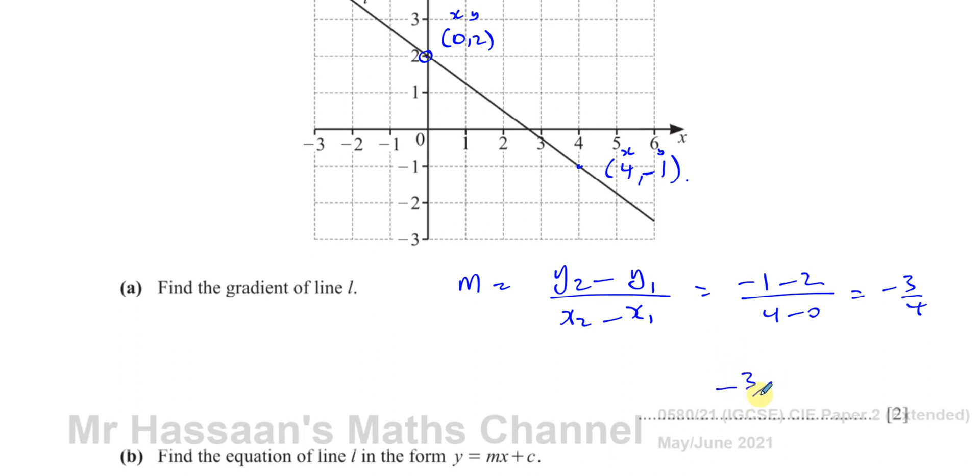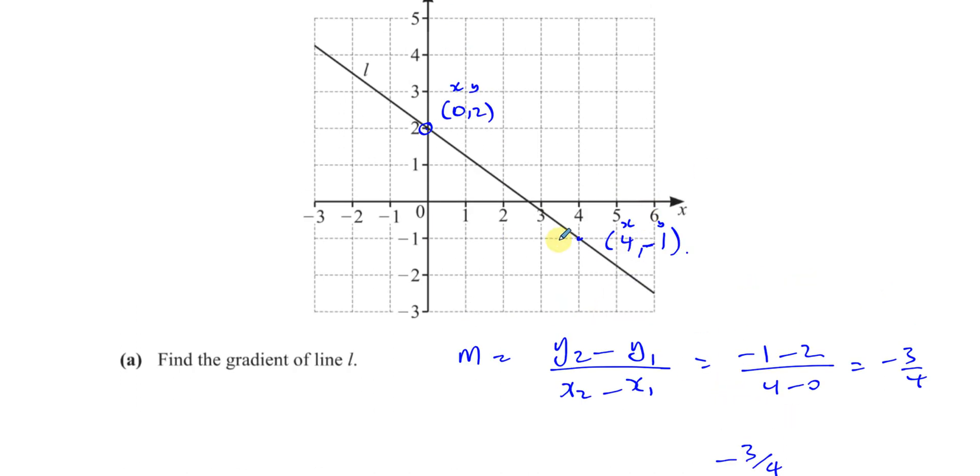That is the gradient of this line, minus 3 quarters. You could also find it by just looking to see that this graph between these two points drops 3 units and it goes across to the right 4 units. So minus 3 over 4. That's the gradient of this line.